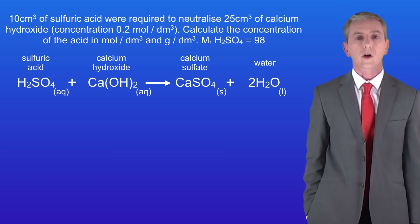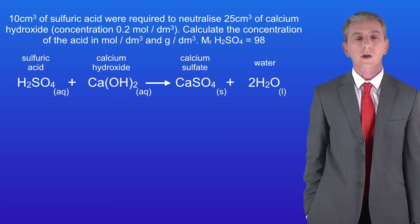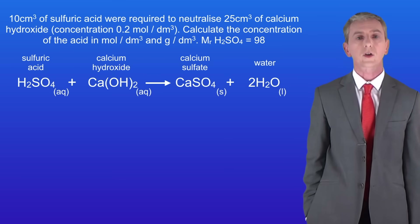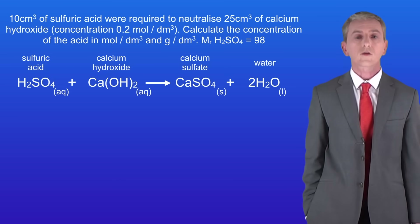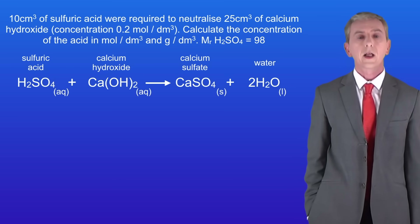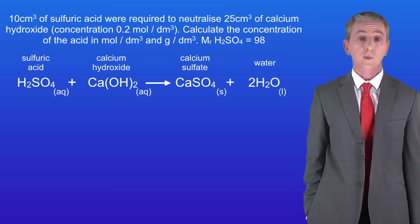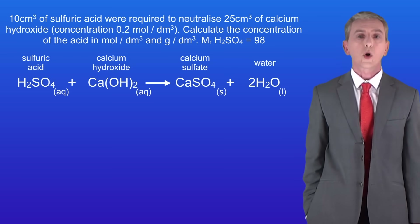Here's a question for you to try. 10 centimetres cubed of sulphuric acid were required to neutralize 25 centimetres cubed of calcium hydroxide with a concentration of 0.2 moles per decimetre cubed. Calculate the concentration of the acid in moles per decimetre cubed and in grams per decimetre cubed. Pause the video now and try this yourself.